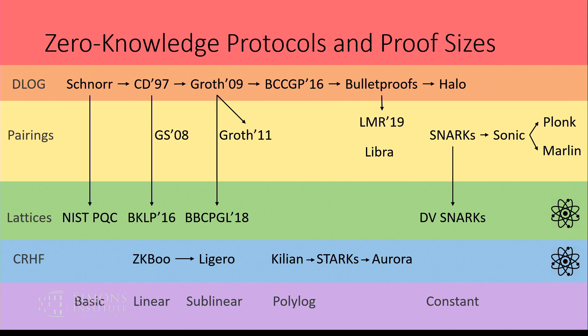The ones at the bottom based on lattices and collision-resistant hash functions are post-quantum secure or plausibly post-quantum secure, and the ones at the top aren't. I used to work in the orange area on discrete logarithm-based protocols. At some point recently, I became interested in the green area — lattice-based zero-knowledge protocols. What's really interesting here is the vertical lines on this diagram.